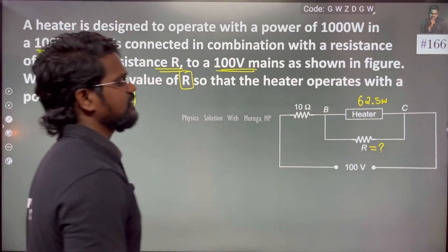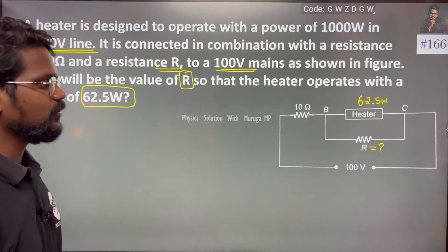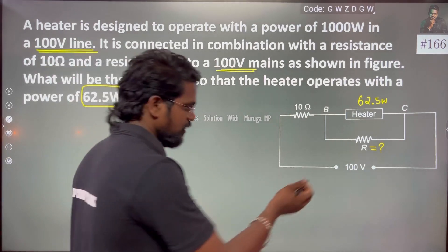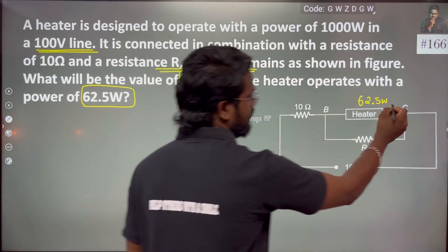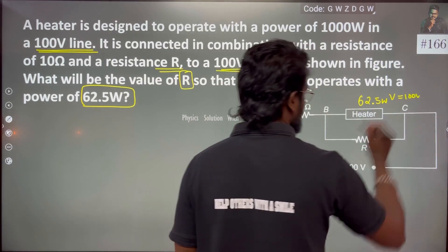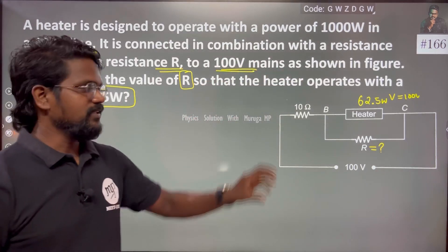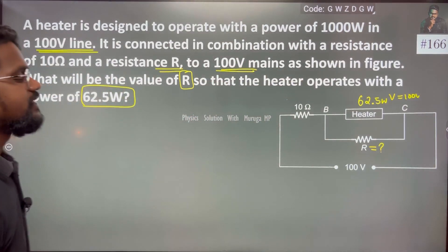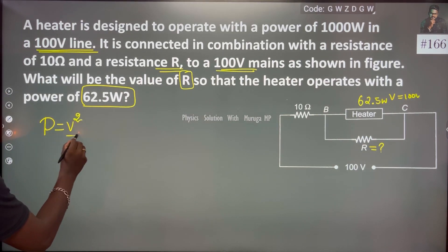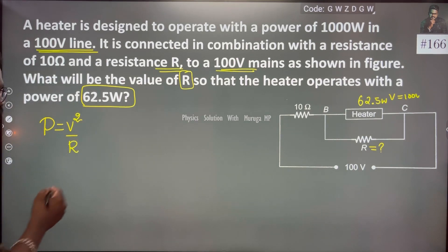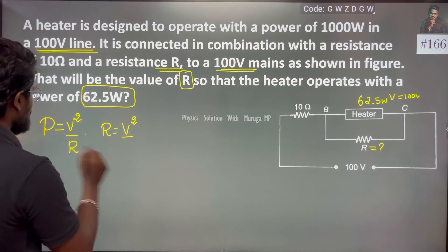For the heater, we know the power and the voltage. The resistance of the heater can be found using the formula: R is equal to V squared by P.